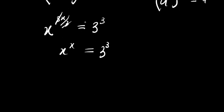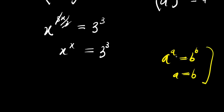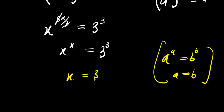Now, if you have a power a equals b power b, that means a equals b. So x power x equals 3 power 3 means x equals 3.